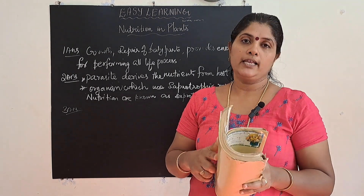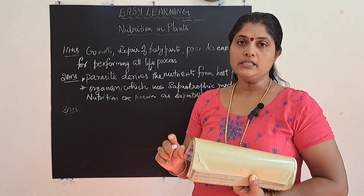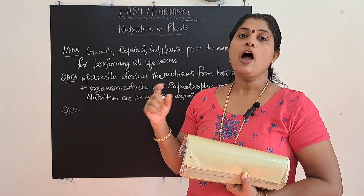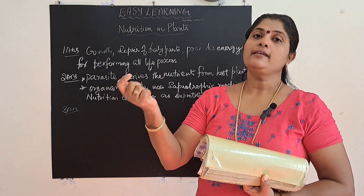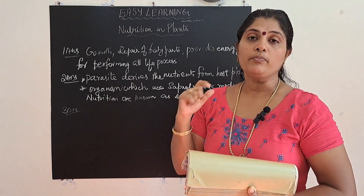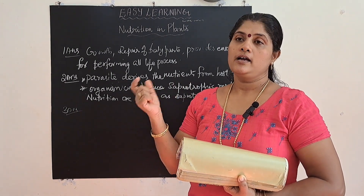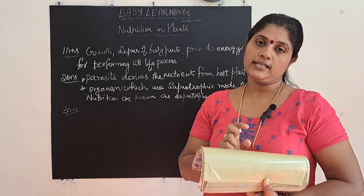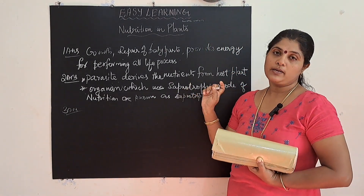The third question: how do you test the presence of starch in leaves? For this activity we take two potted plants — one kept in a dark room and the other under sunlight. After three to four days, we take the plant from the dark room and keep it under sunlight. After another few days, we pluck the leaf and perform the iodine test. When we put one drop of iodine on the leaf, we observe that the color changes to blue or black, which shows that starch is present in the leaf.